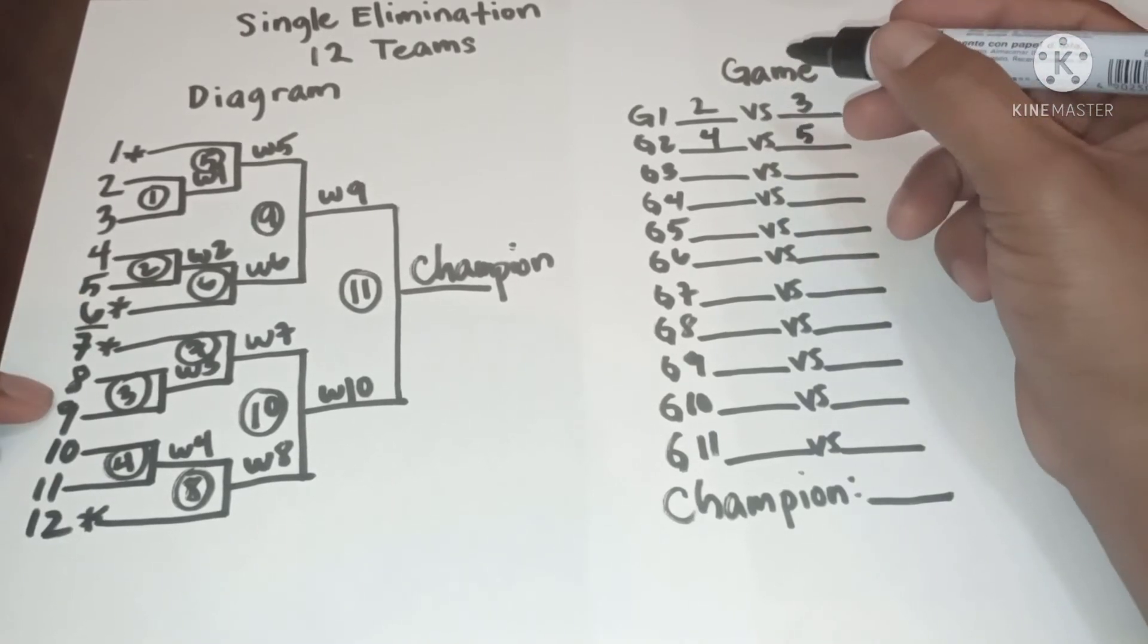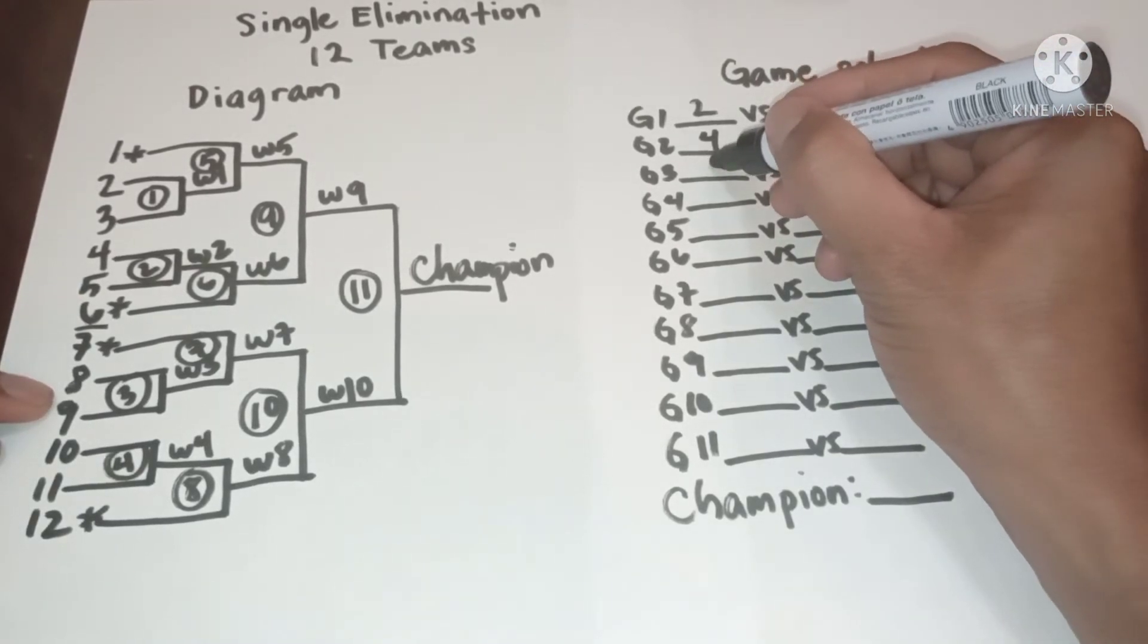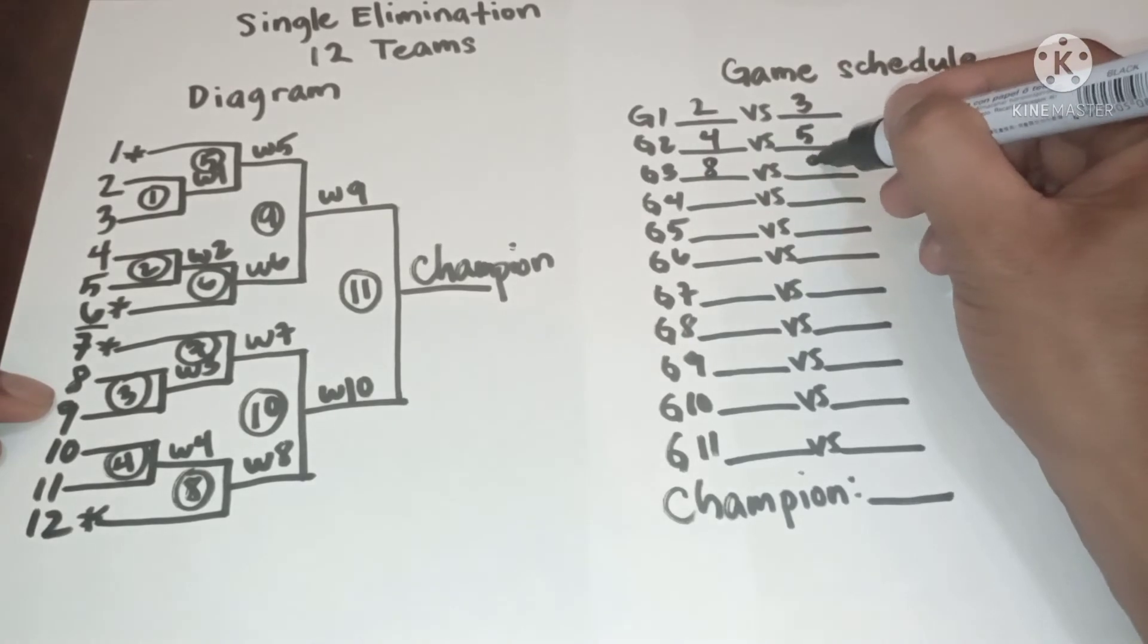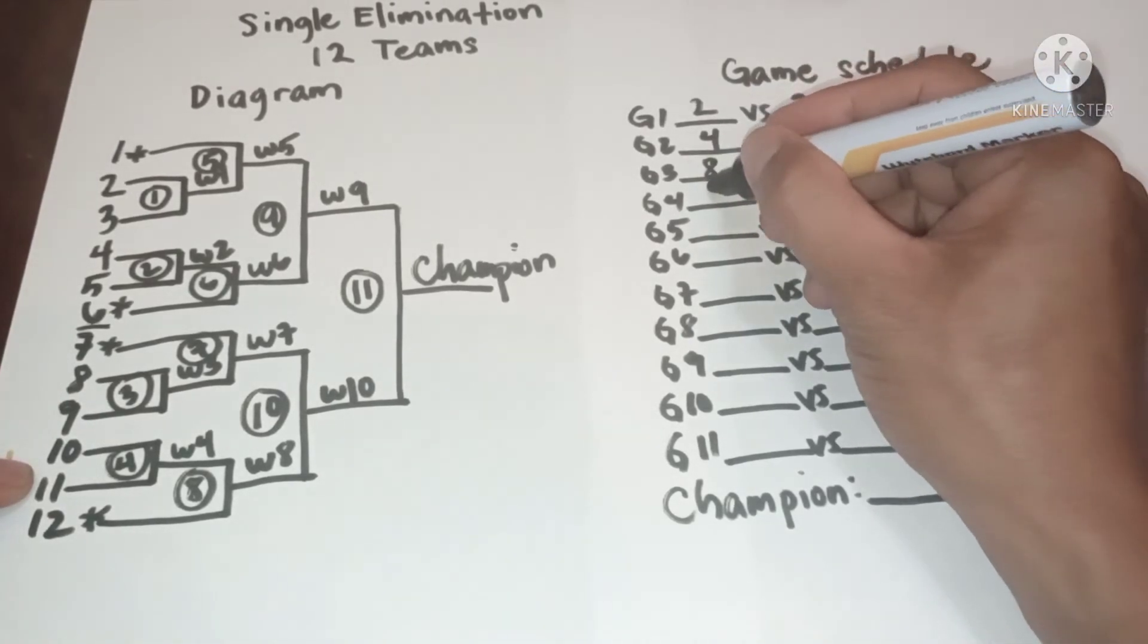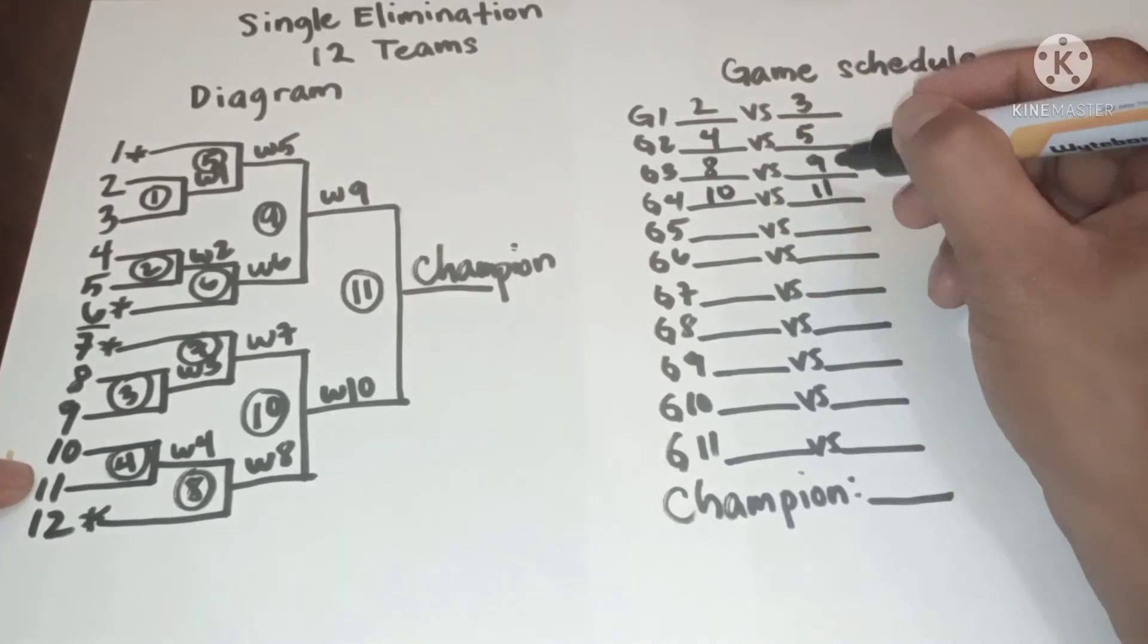In game 3, we have 8 versus 9. In game 4, we have 10 versus 11.